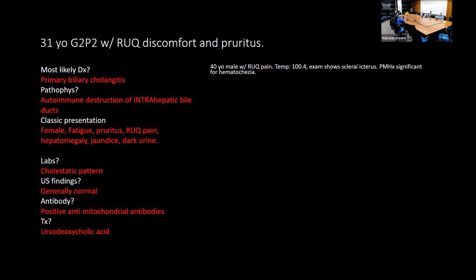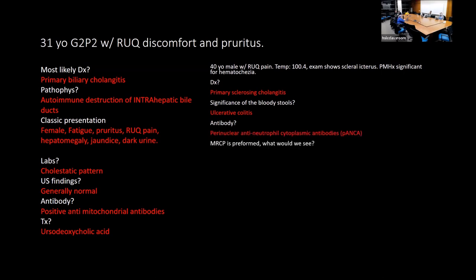A 40-year-old male with right upper quadrant pain, fever, scleralicterus, and a past history of hematochezia — think primary sclerosing cholangitis (PSC). The bloody stools are significant because they suggest ulcerative colitis. The associated antibody is p-ANCA.